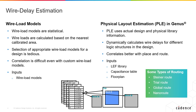Unfortunately, one of the cons of wire load models is that they are statistical, and they're calculated by the foundries based on the nearest enclosing block area. So, based on a given block size, the STA tools must predict what the actual wire length from one cell to another must be. This can be error-prone because not every cell in the design is placed at these estimated wire lengths.